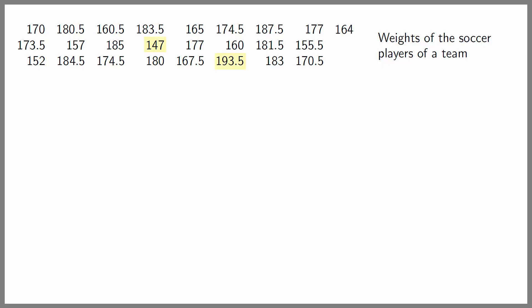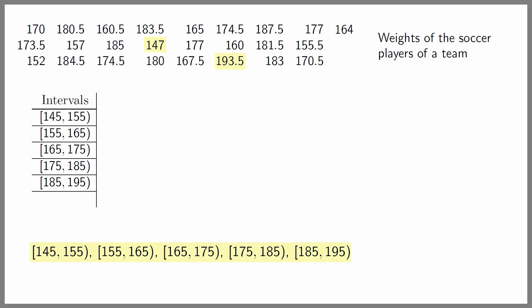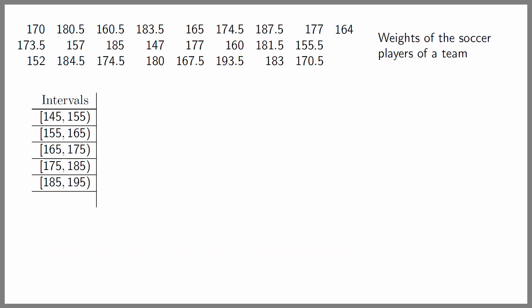Since the smallest datum is 147 and the largest is 193.5, we'll consider the intervals [145, 155), [155, 165), [165, 175), [175, 185), and [185, 195). Then we build a table of data grouped in these intervals of the statistical variable.